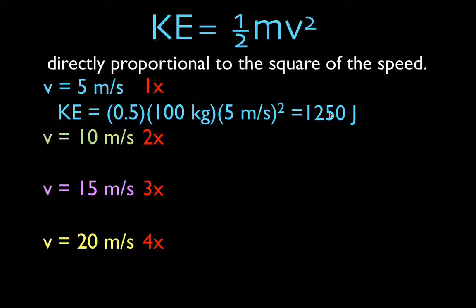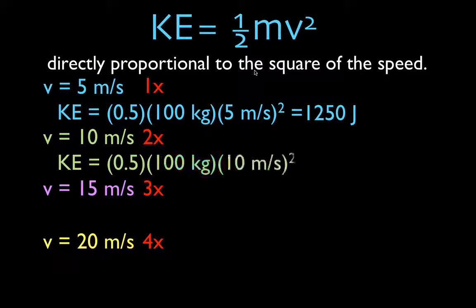Now let's see. Now we're going to double the velocity. Let's think what is going to happen to the kinetic energy given that it's not just v, it's velocity squared, and it's directly proportional to the square of the velocity. So let's calculate it. We have 10 meters per second for our velocity, 2 times 5. 10 squared is 100 times another 100 is 10,000 times a half is 5,000.